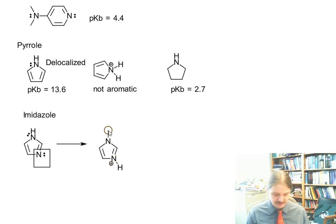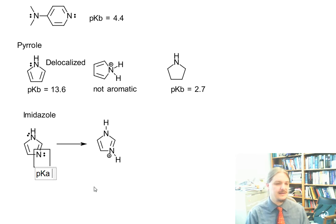And so the conjugate acid of imidazole looks like this. And this cation is resonance stabilized between the two nitrogens primarily, though there is also resonance structure with a positive charge on carbon. Imidazole is more basic than pyrrole, and that shouldn't be surprising because it has an extra nitrogen and it's delocalized.